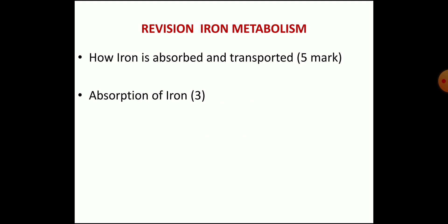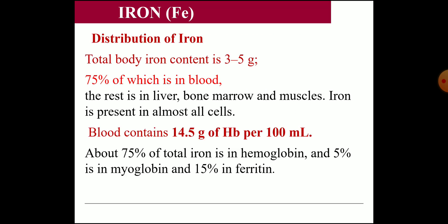Sometimes storage can also be asked. So iron — how is it distributed in the body? The total iron content is 3 to 5 grams. About 75% is in the blood and the rest is in the liver, bone marrow, and muscles, and it is present in almost all cells. Blood contains 14.5 grams of hemoglobin per 100 ml, and about 75% of total iron is in hemoglobin, 5% in muscle as myoglobin, and about 15% as the storage form.